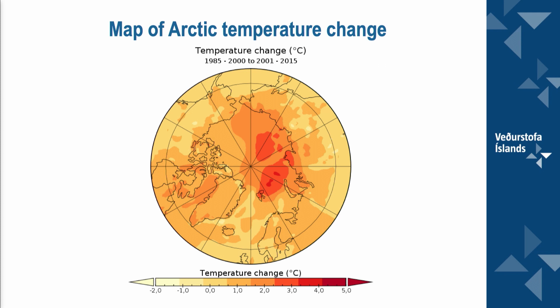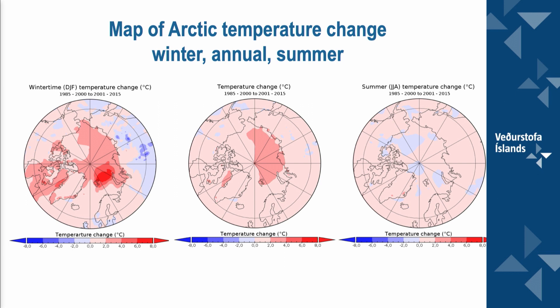If I break this into seasons — which is quite important — I have to change the scale again. The middle panel is the same figure I just showed, but with fewer colors. The reason it has fewer colors is because I had to reserve them for the wintertime. In the wintertime, the Arctic amplification is actually far greatest — it is bigger in winter than in any other season, although it does occur in other seasons too.